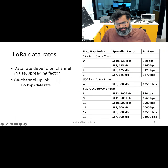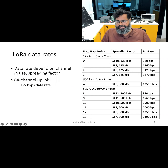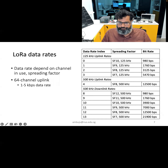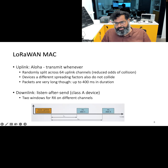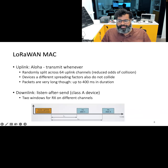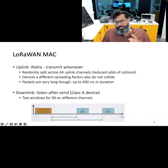LoRa as a protocol supports different data rates depending on the specific channel being used and the spreading factor. For example, the 64 uplink channels that are 125 kilohertz wide can each support a maximum data rate of 5 kilobits per second for a specific spreading factor. Regarding medium access control for LoRaWAN, due to low bit rates, packets can be very long in duration — typically a few hundred milliseconds. Since performing clear channel assessment is not very reliable at very long distances, LoRa employs a basic Aloha protocol to mediate access.